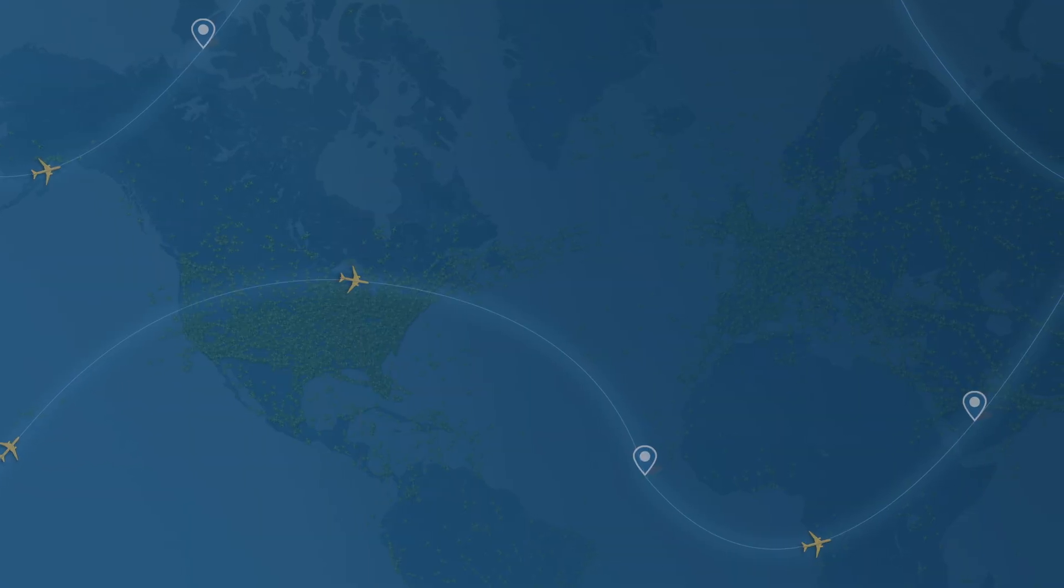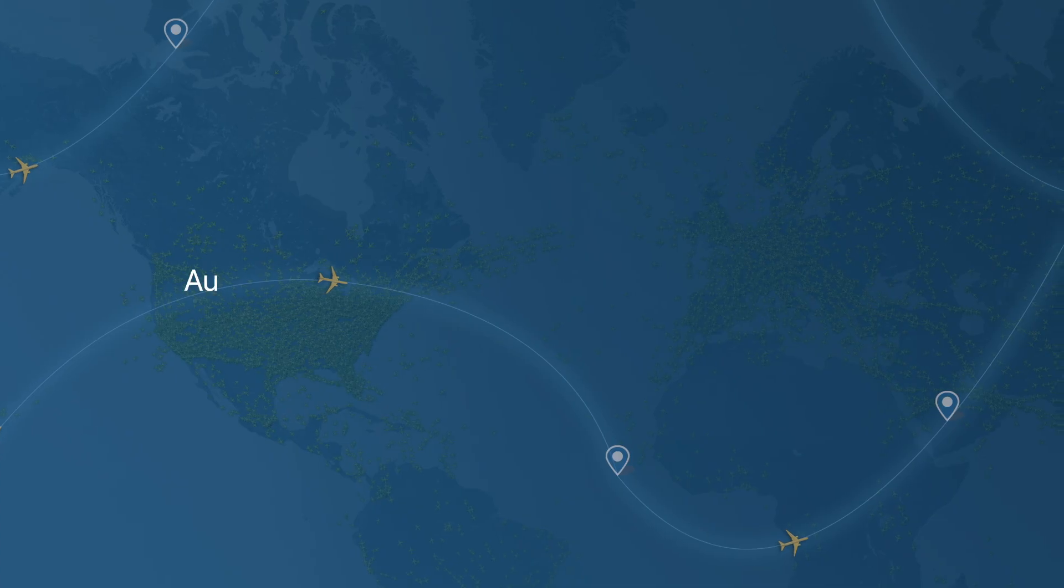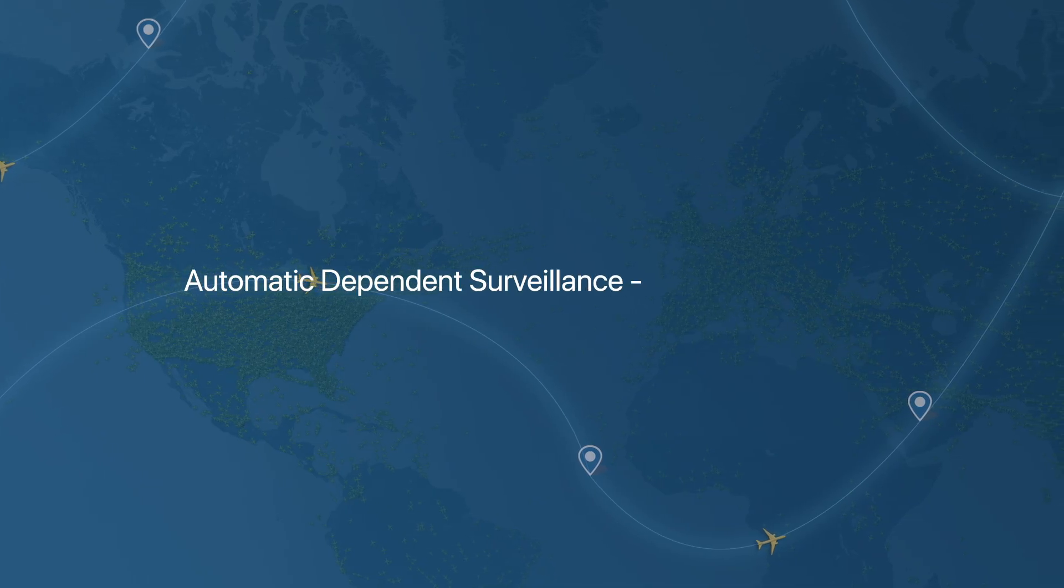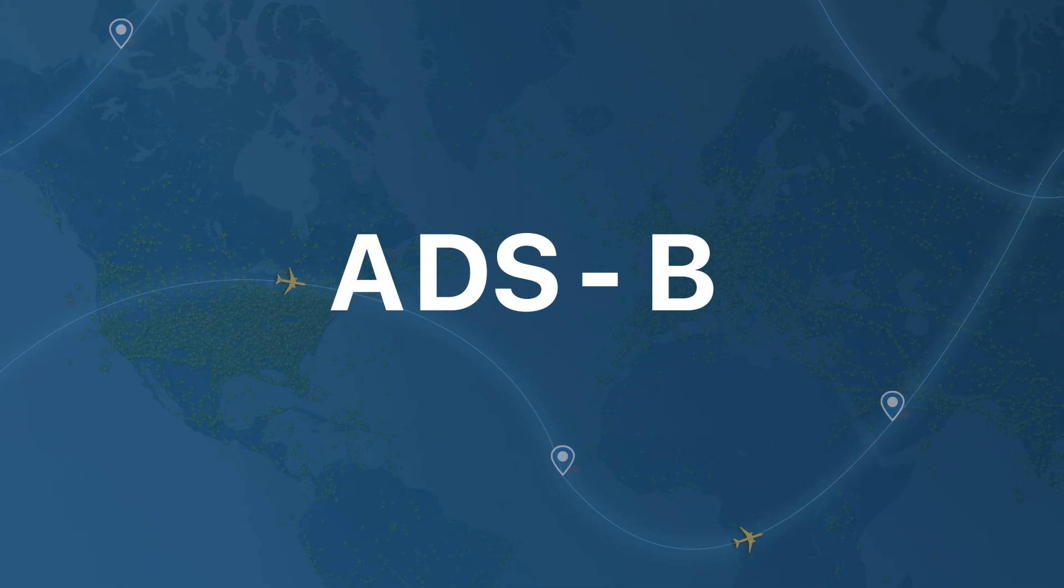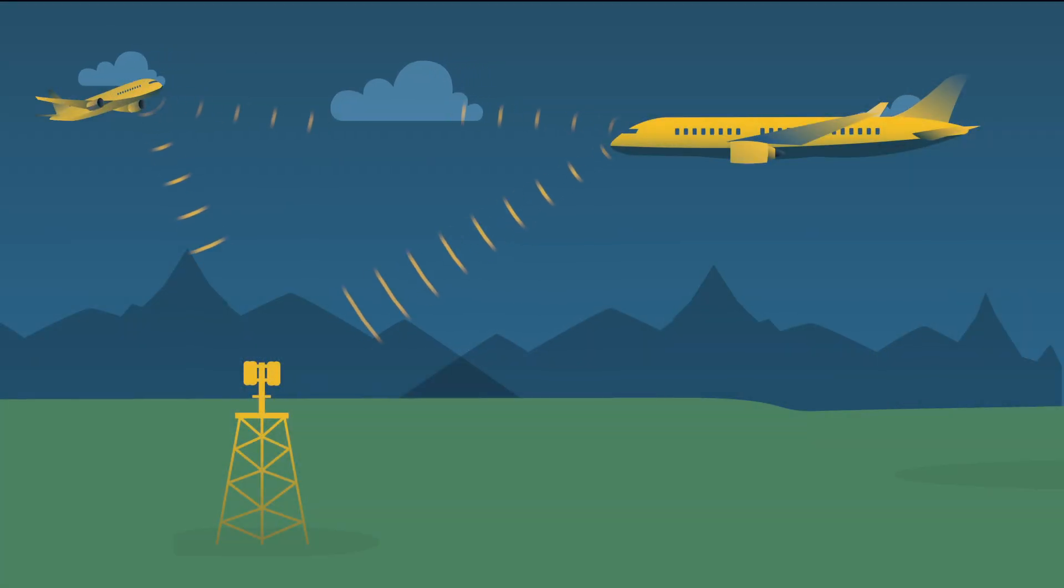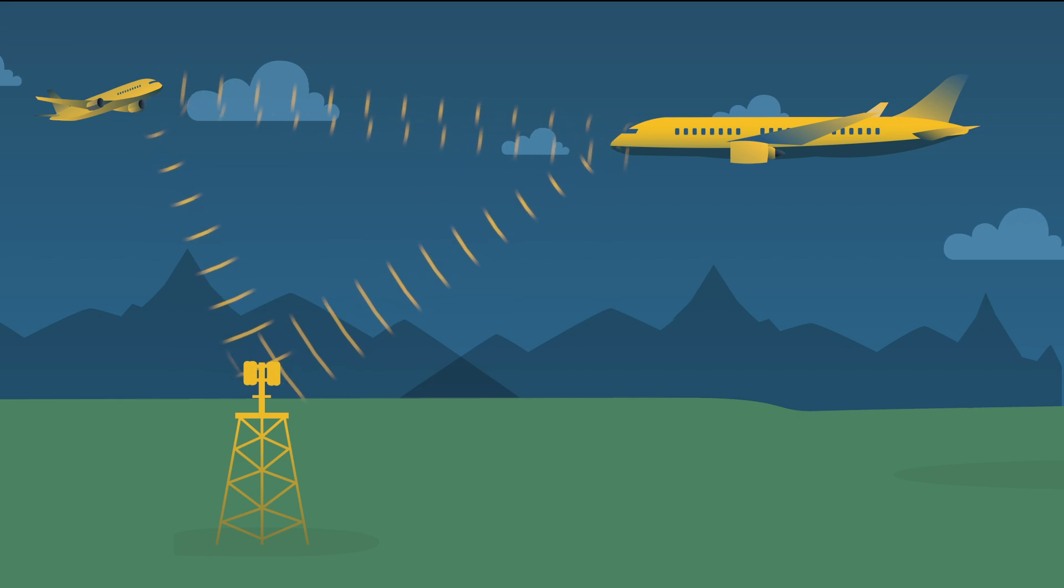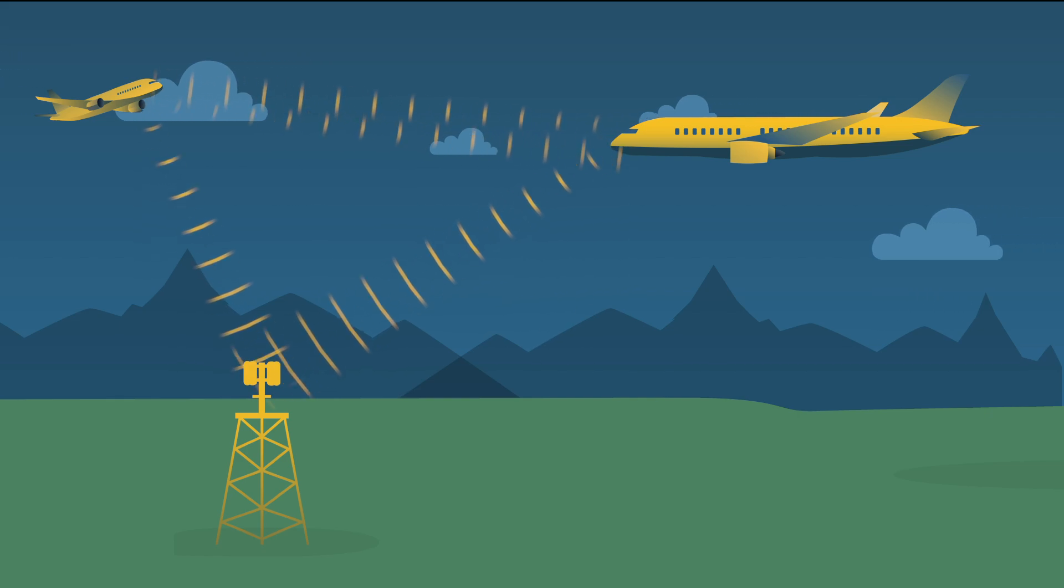The primary technology used to receive live flight information is called Automatic Dependent Surveillance Broadcast or ADS-B. ADS-B enables aircraft to broadcast their position, altitude, speed and other useful information to ground stations and other aircraft.